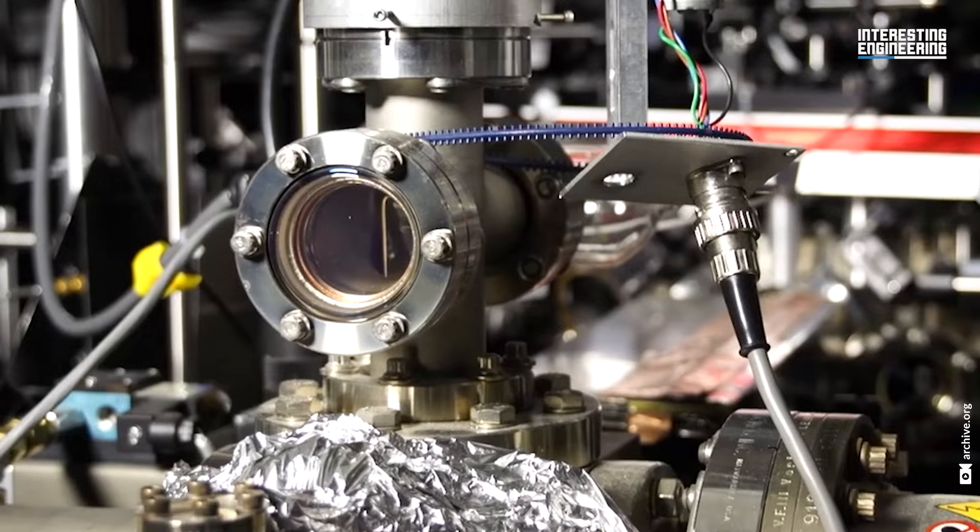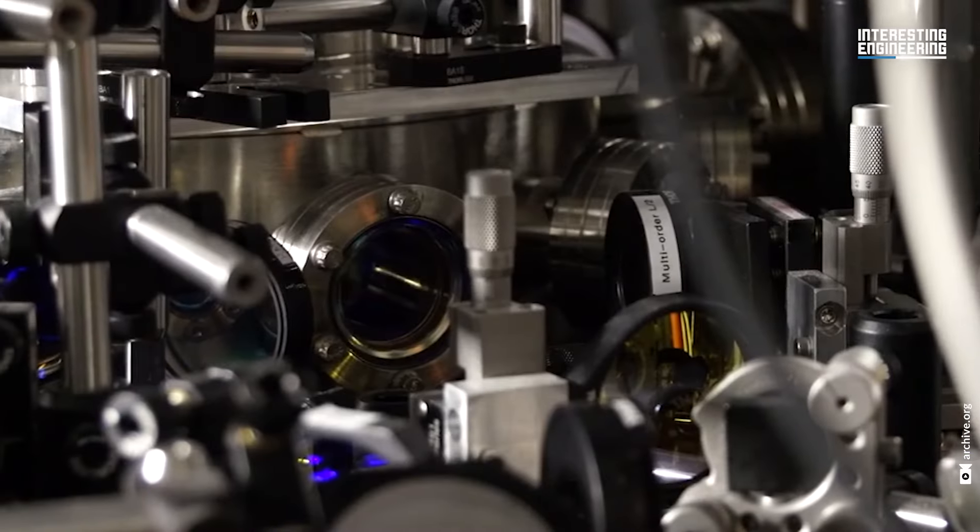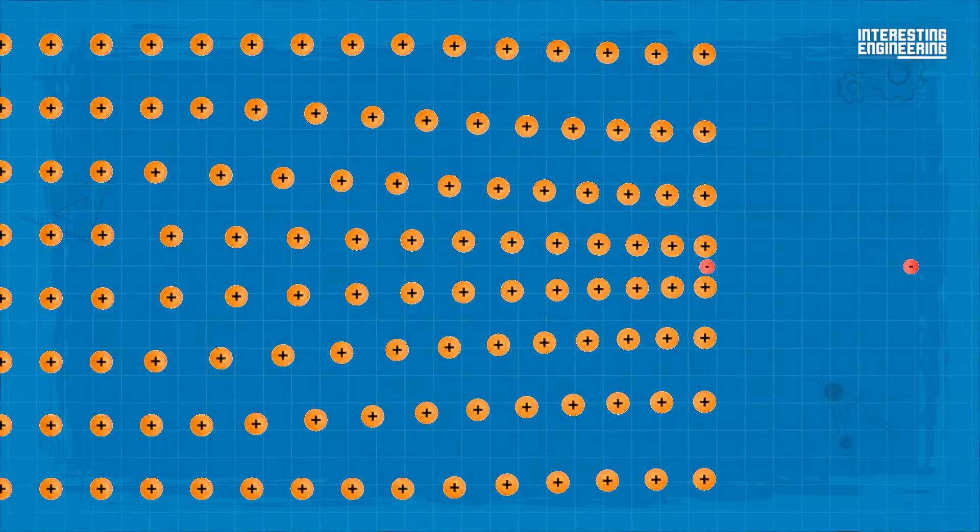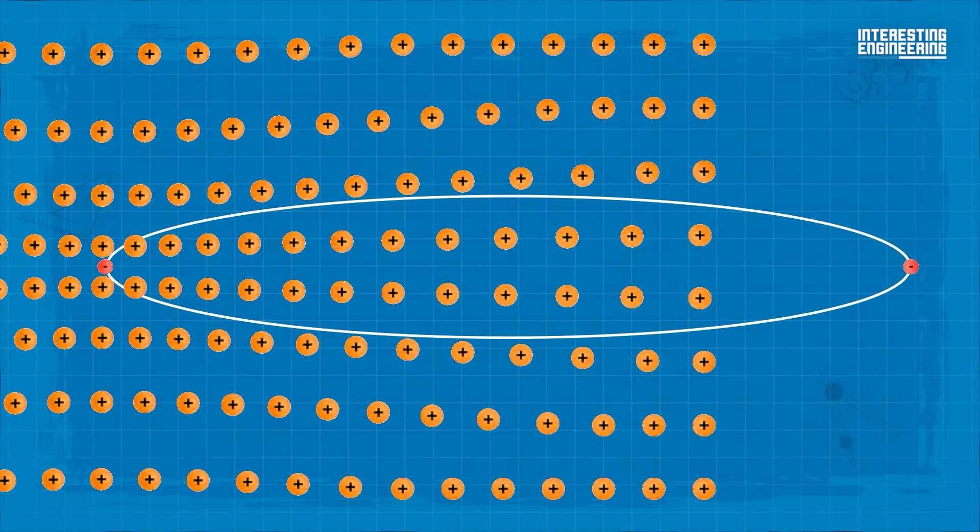In a superconductor, electrons form special partnerships known as Cooper pairs. These Cooper pairs move in perfect synchronization through the material without scattering or collisions.